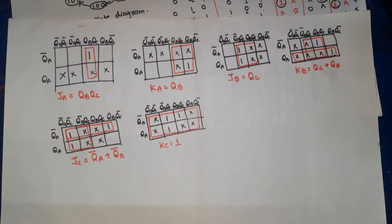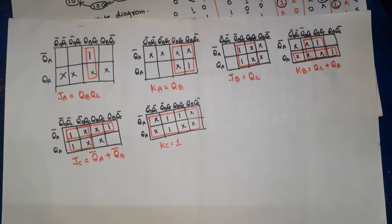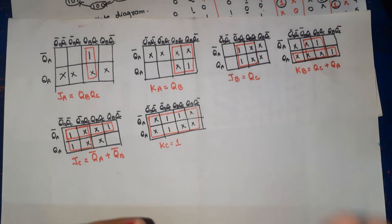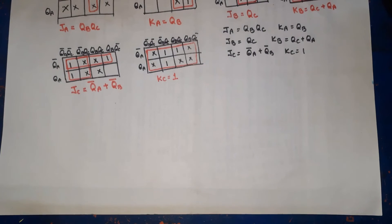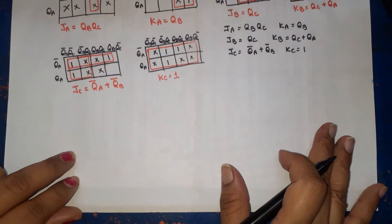So our final simplified equations are: JA = QB·QC, KA = QB, JB = QC, KB = QC + QA, JC = QA-bar + QB-bar, KC = 1. Now we write these and draw the circuit diagram.